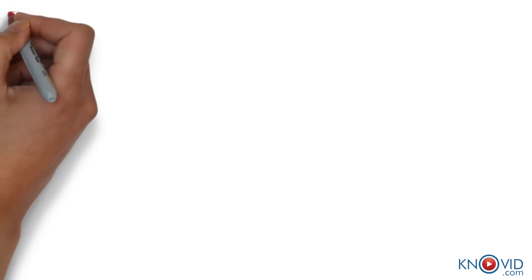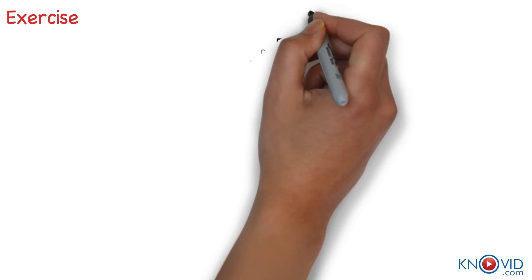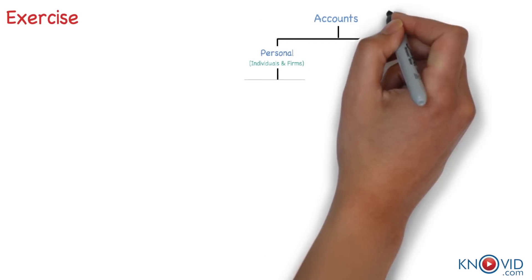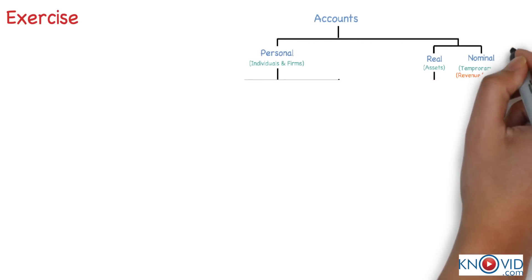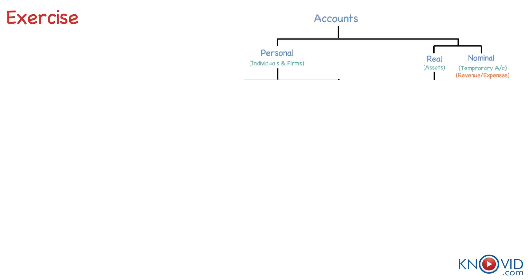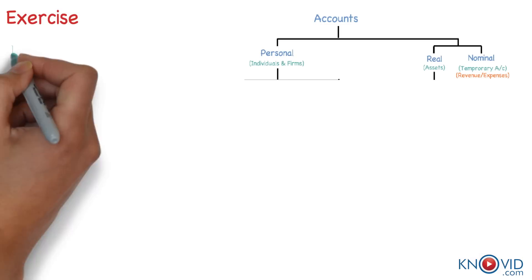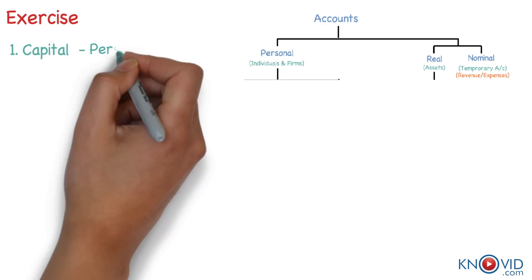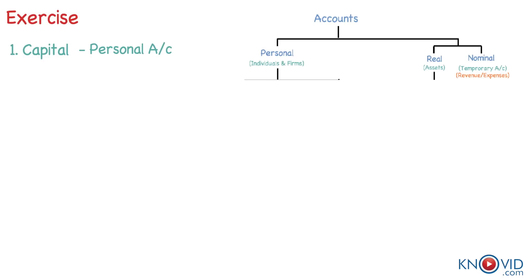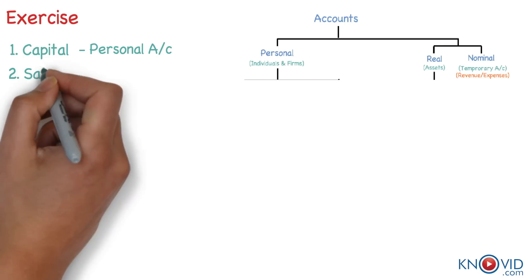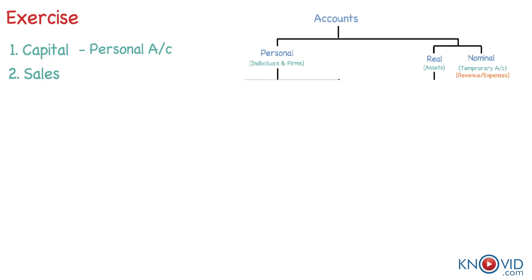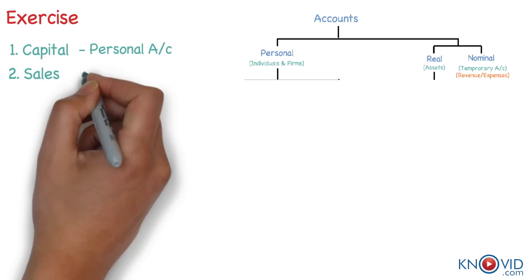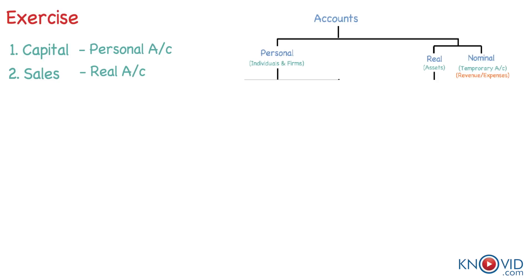For increasing our clarity, let us classify the following items into personal, real, or nominal accounts. Capital is a personal account. Sales is a real account.